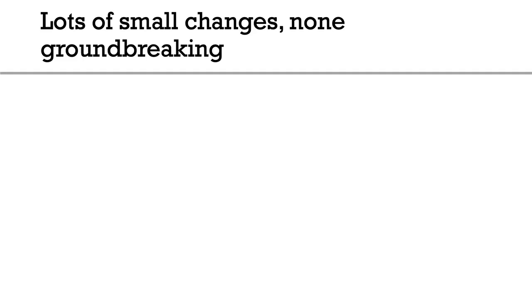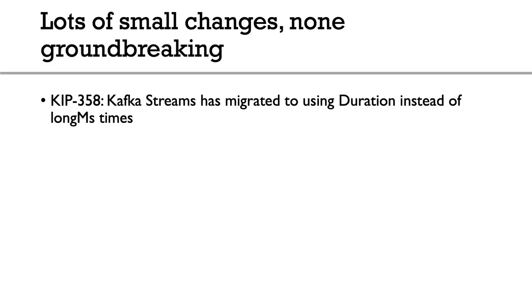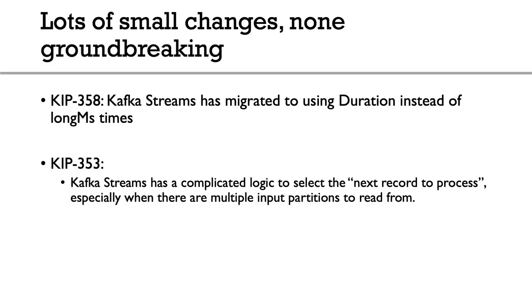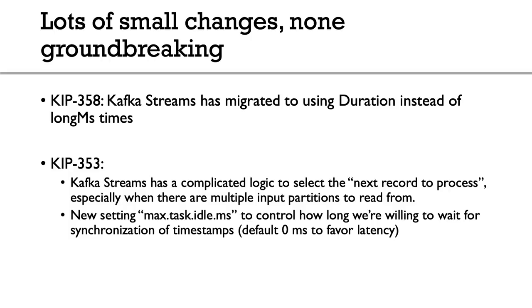For Kafka Streams there are changes but none groundbreaking. The API has migrated from long millisecond times to Duration, so you may see a lot of deprecation warnings when upgrading. Also, as part of KIP-353, there is a new setting called `max.task.idle.ms` which controls how long Kafka Streams is willing to wait for timestamp synchronization across different partitions. The default is zero, which favors low latency and the old behavior, but increasing it can improve timestamp synchronization.